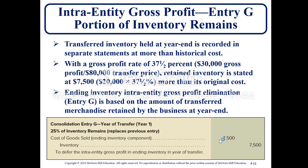If a portion of the inventory remains, transfer inventory held at year one is recorded in separate statements at more than historical cost. The gross profit rate of 37.5% — $30,000 gross profit divided by $80,000 transfer price — means retained inventory is stated at more than its original cost. Entry G for ending inventory intra-entity gross profit elimination is based on the amount of transferred merchandise retained by the business at year-end. For year-end one, with 25% of the inventory remaining, entry G is a debit to cost of goods sold for $7,500 and a credit to inventory to defer the intra-entity gross profit in inventory at the year of transfer.